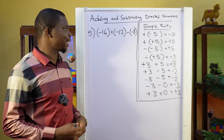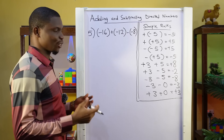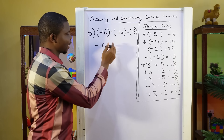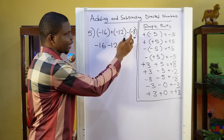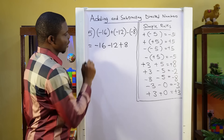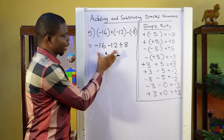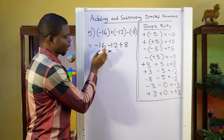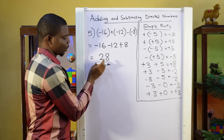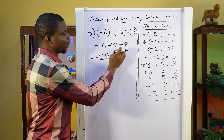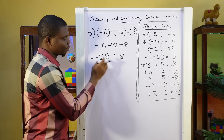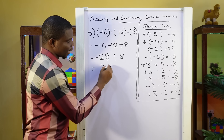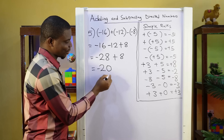Question 5: minus 16 plus minus 12 minus minus 8. First we open the bracket: we have minus 16. Positive doesn't change the sign inside the bracket, so we still have minus 12. Negative changes the sign inside the bracket, so this becomes plus 8. We take them two at a time: minus 16 minus 12 — the signs are the same, so we add: 12 plus 16 is 28, and this takes a negative sign, giving minus 28, then plus 8. The signs are different: 28 minus 8 is 20. The sign is that of the bigger number, so the answer is minus 20.